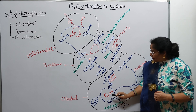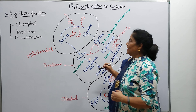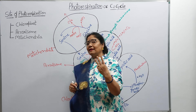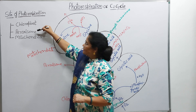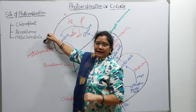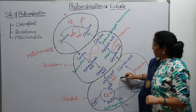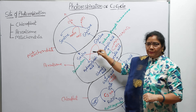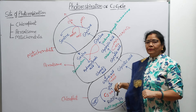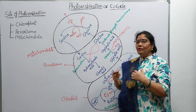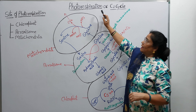Photorespiration mein teen organelles of the cell involve hote hain: chloroplast, peroxisome, aur mitochondria. Yeh teeno cellular organelles ko aas-paas banaya gaya hai, kyunki inteeno ke contribution se — teeno organelles involve honge — tab yeh C2 cycle chalegi jise hum photorespiration kehte hain.